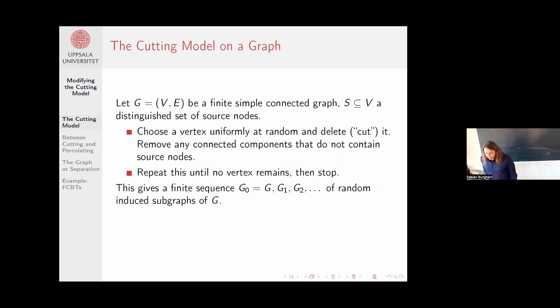So the setting is as follows. We work on some finite simple connected graph. In this graph, we select a set of vertices as sources. Now what I do at each step is I select one vertex uniformly at random and I cut it, which means I remove it.